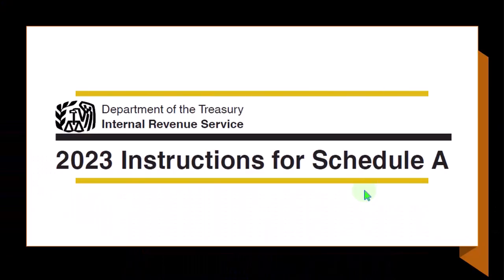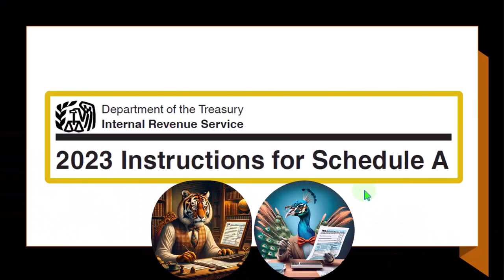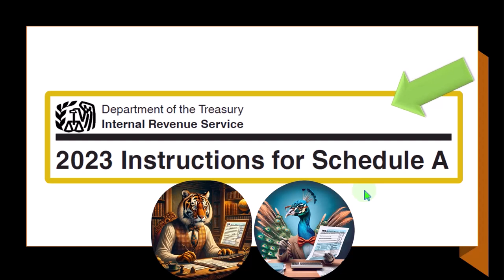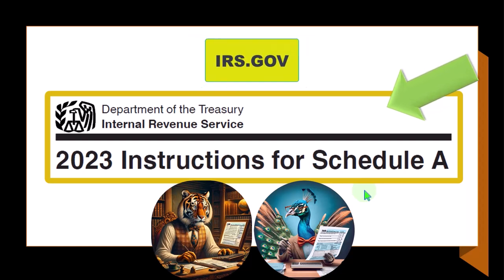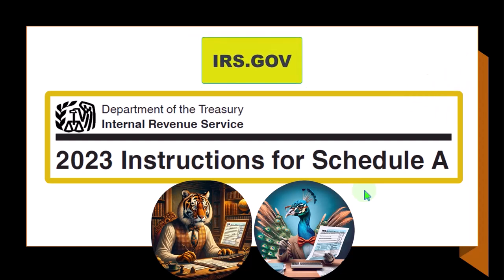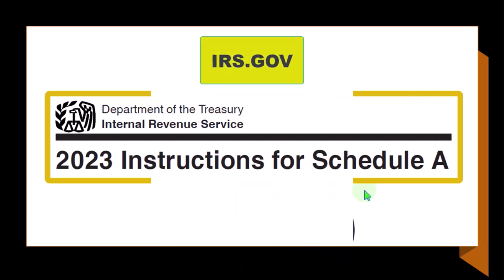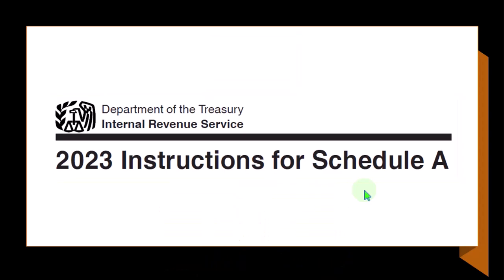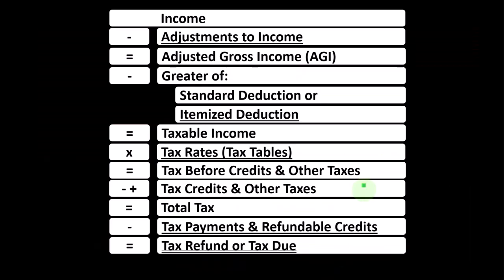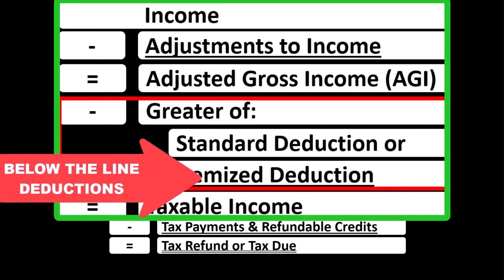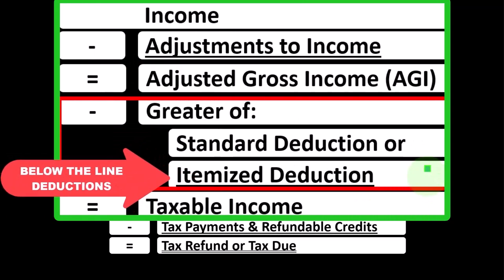Most of this information can be found in the instructions for Schedule A for 2023, which you can find on the IRS website at irs.gov. Looking at the income tax formula, we're focused on what I would call the below-the-line deductions — more specifically, the itemized deductions.